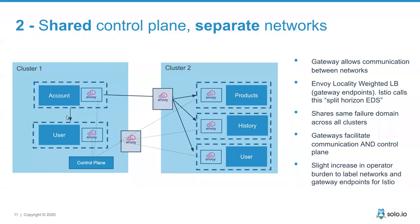Another approach is not assuming flat networks, but using a single control plane to manage Envoy proxies through gateways that bridge different networks. Istio supports this type of shared control plane across separate networks, and uses Envoy features like locality-weighted load balancing. So when the account service tries to talk to the user service and it's unavailable, Envoy can be programmed to route across into the second cluster.